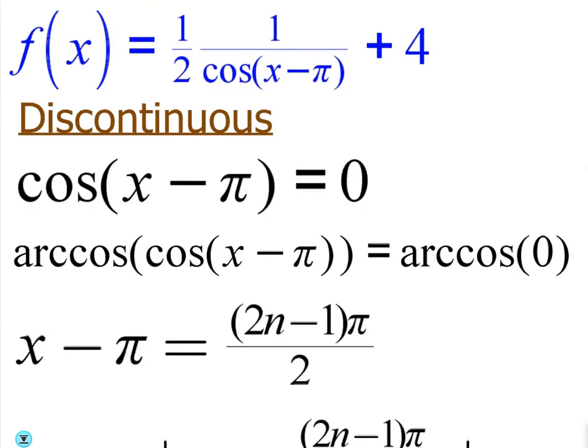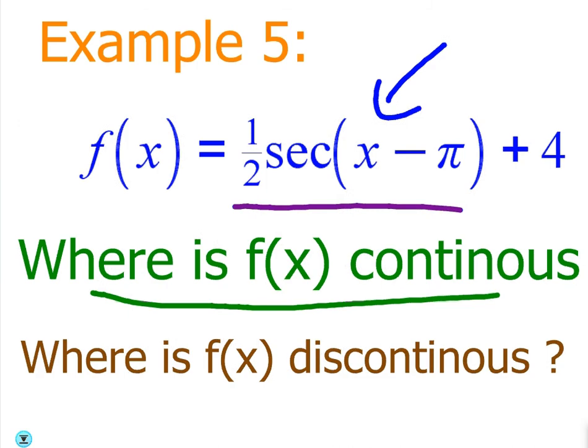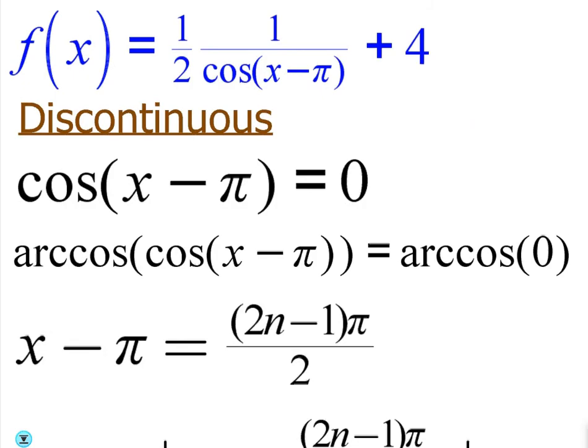So secant can be written as one over cosine. So it says it's secant of x minus pi. I'm going to rewrite it as one over cosine of x minus pi. And then I'm going to take whatever that denominator is and set it equal to zero.